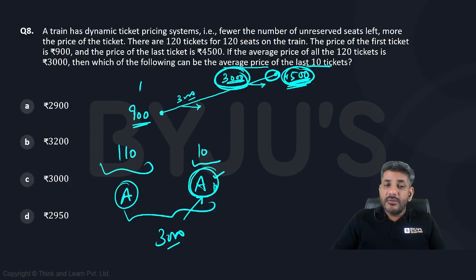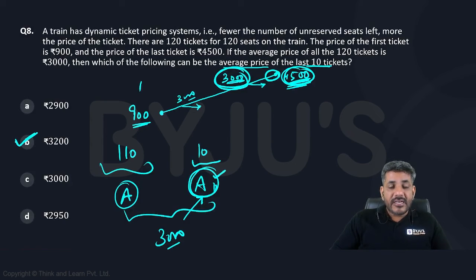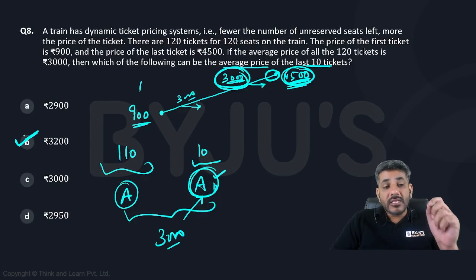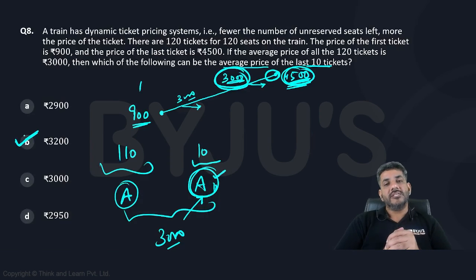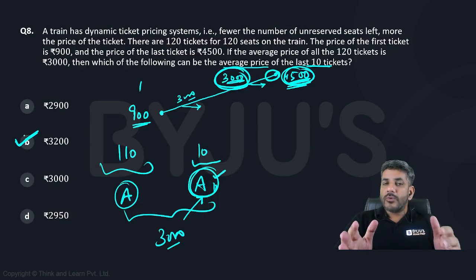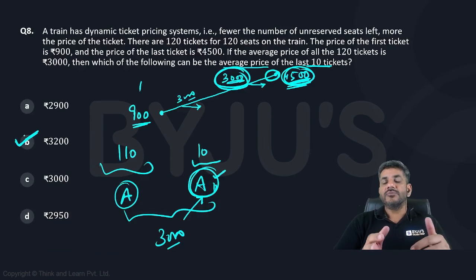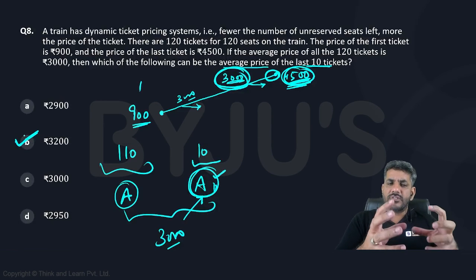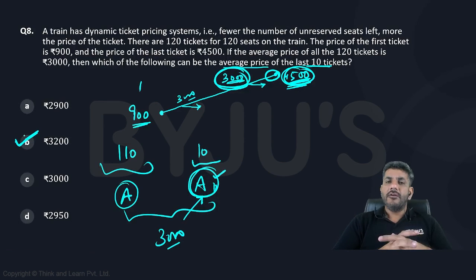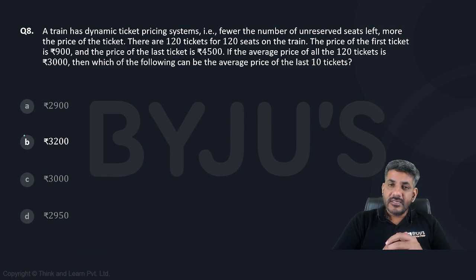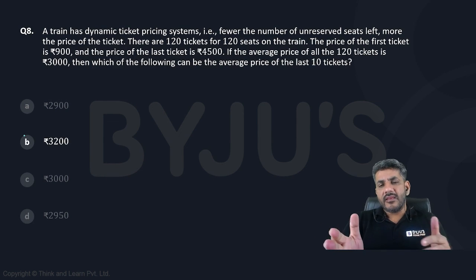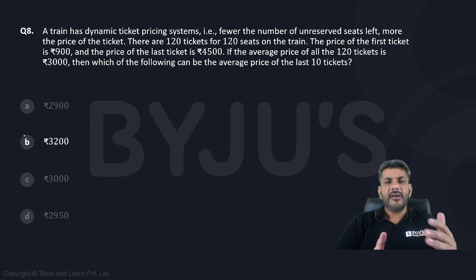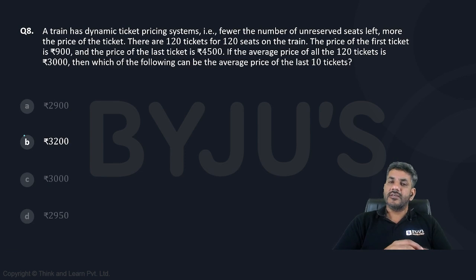The average of the last 10 tickets has to be more than 3000, and hence the answer is only one option: 3200. This was not a question of mathematics — it was more a question of logical reasoning. A little concept clarity would have told you that the price has to be more than the average price and hence the answer is 3200. You can keep it in the easy to moderate category depending upon your comfort level with logical reasoning.